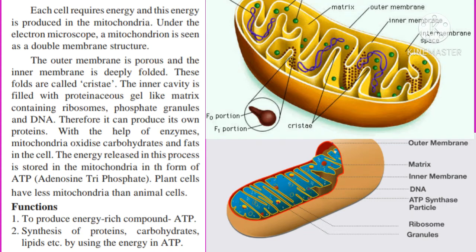Functions of mitochondria: First, to produce the energy-rich compound ATP. Second, synthesis — that is, the making of proteins, carbohydrates, lipids, etc. — by using the energy in ATP.